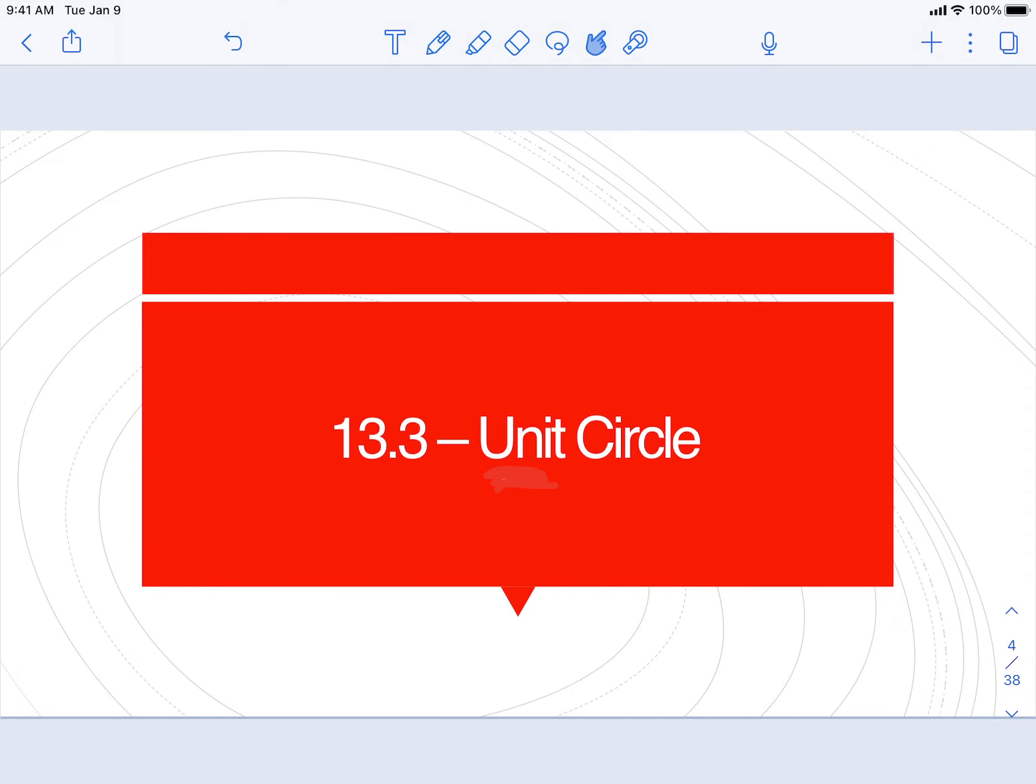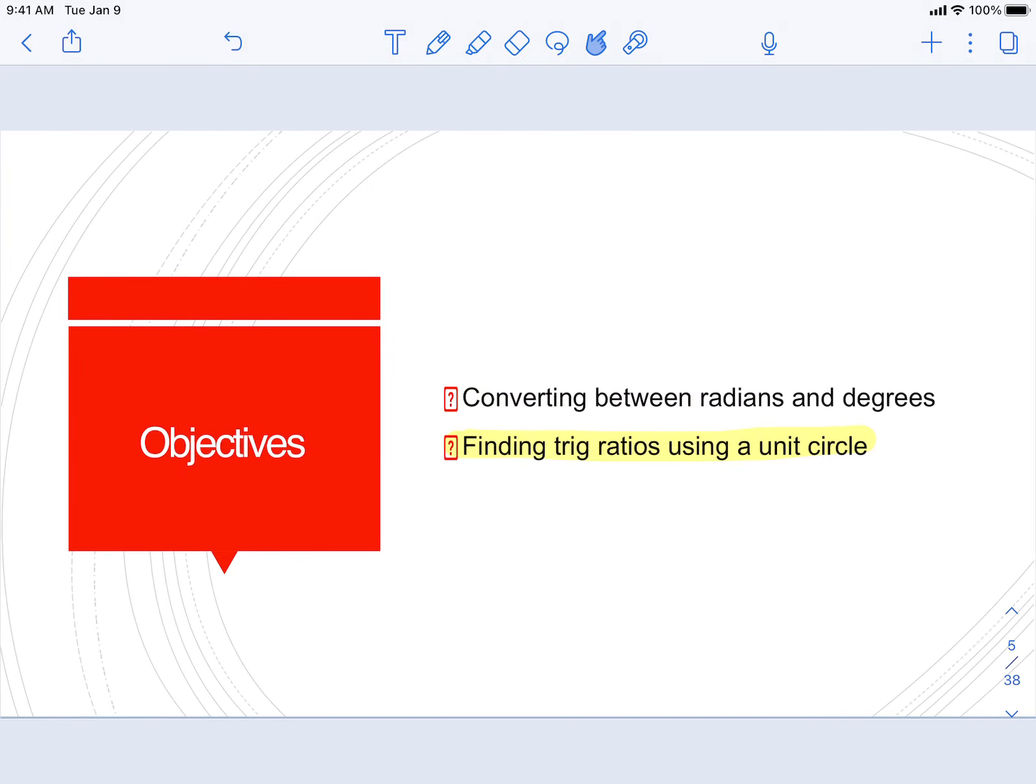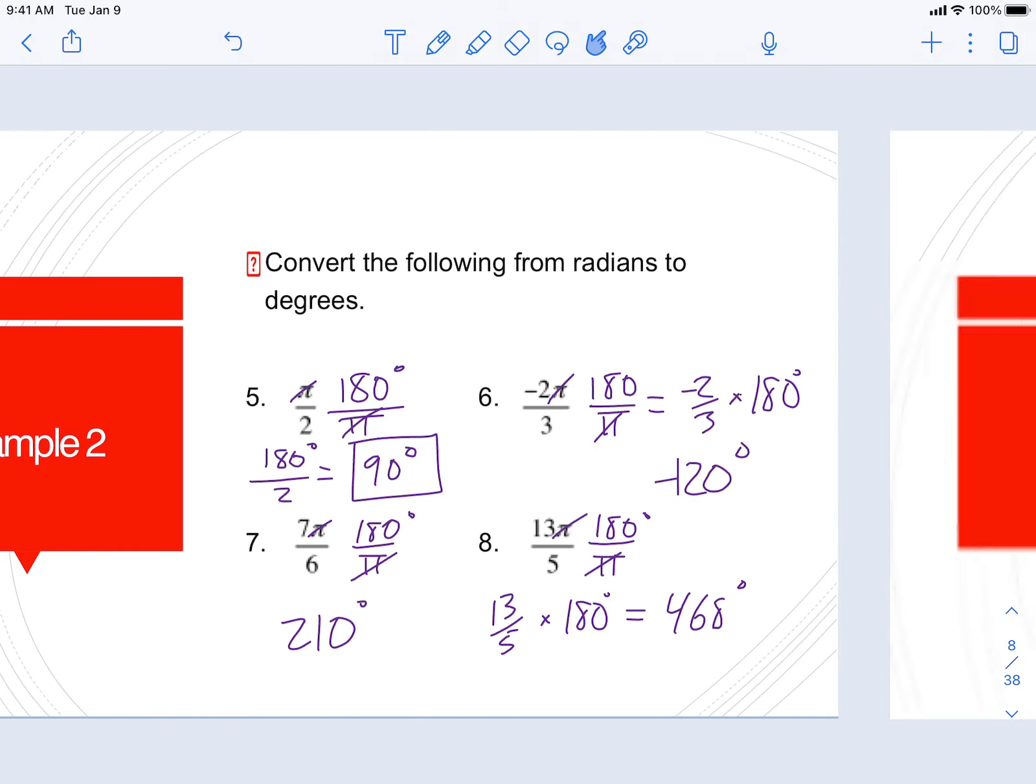Hey guys, Mr. Gron here. 13-3, the unit circle. In this video we're finding trig ratios using the unit circle, and specifically we're going to do tangent and cotangent.